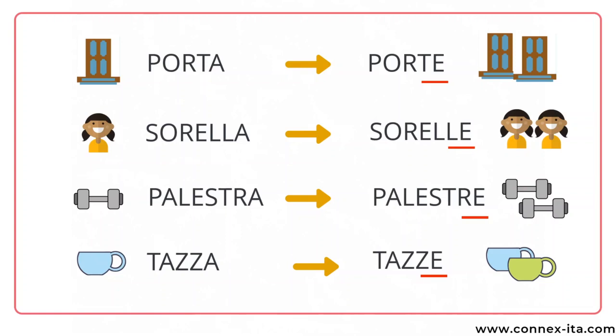These are instead feminine nouns. Porta is 'the door', and in the plural is porte. Sorella means 'sister', and if you have more than one, you say sorelle. Palestra is 'the gym', and its plural form is palestre. And the last one is tazza, 'cup', that in the plural becomes tazze. Porte, sorelle, palestre, tazze.